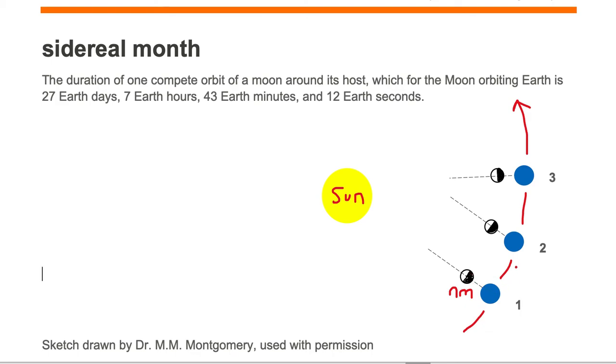This time duration from position one to position two, where the moon took to go around the Earth one time, is a sidereal month. It is 27 Earth days, 7 Earth hours, 43 Earth minutes, and 12 Earth seconds.